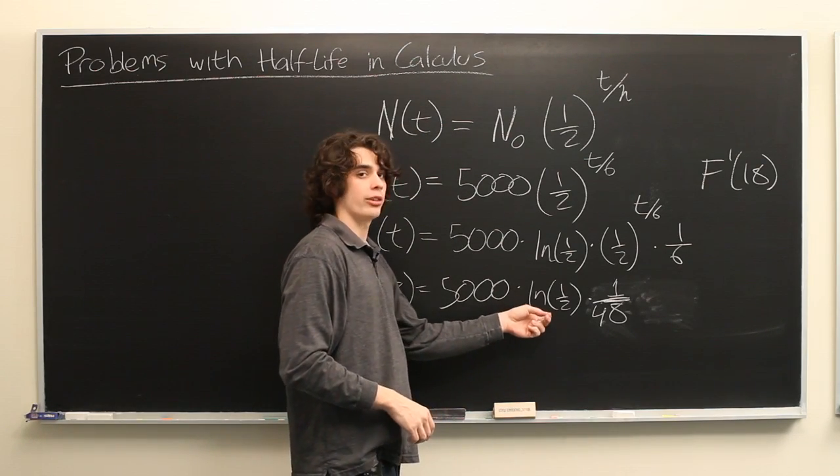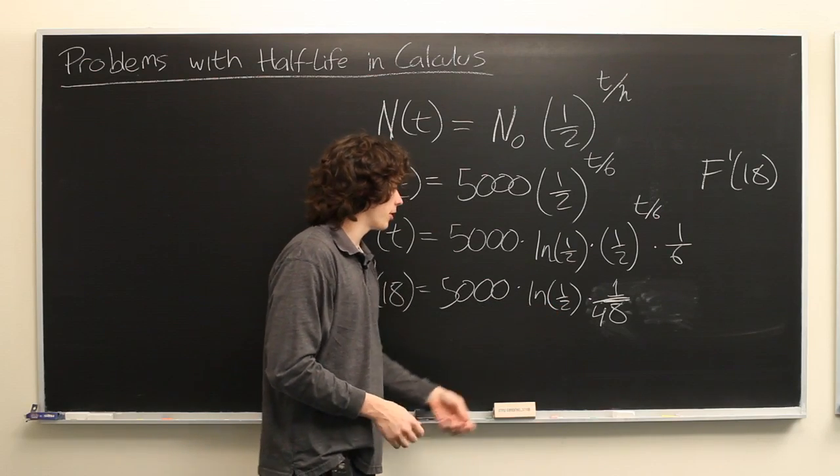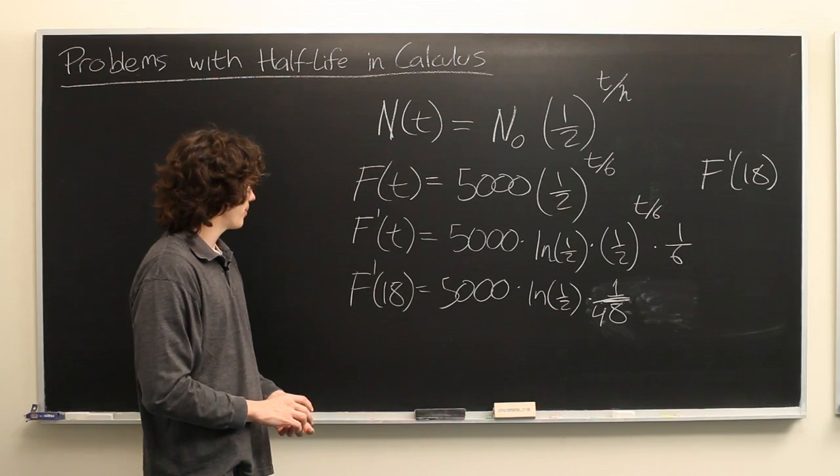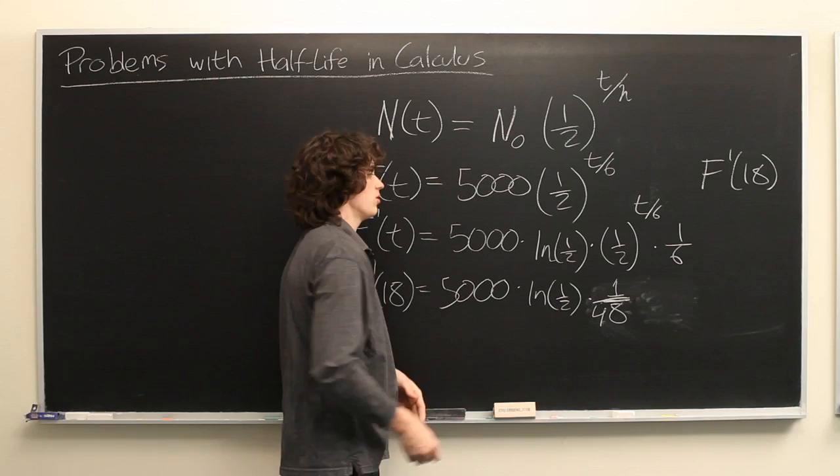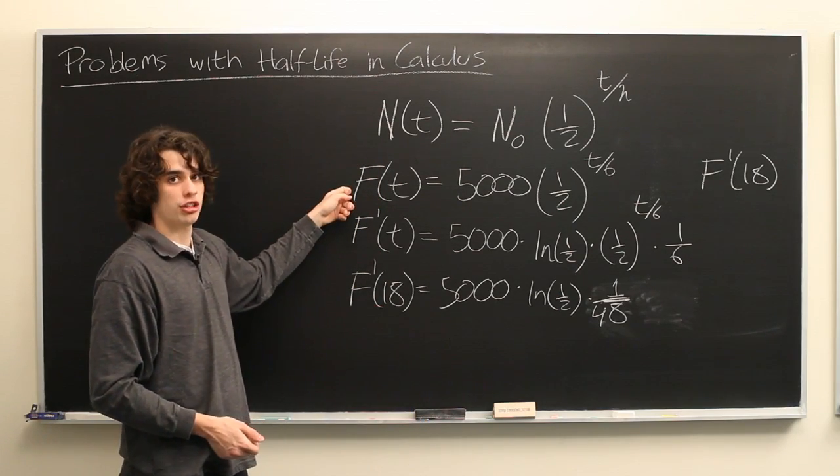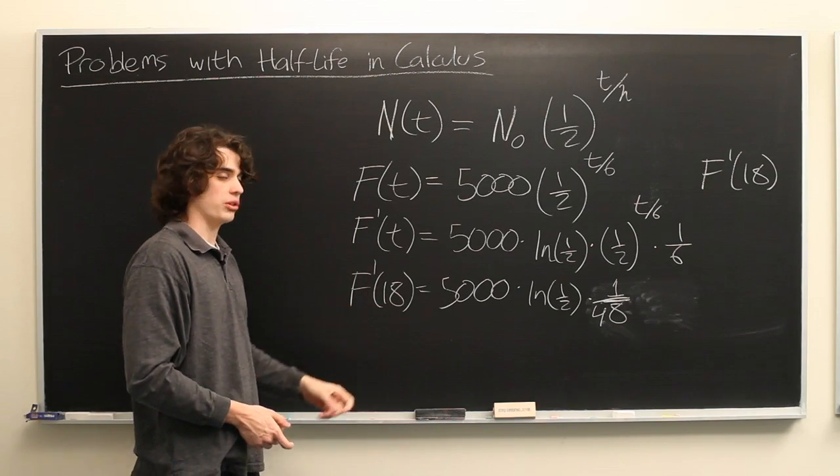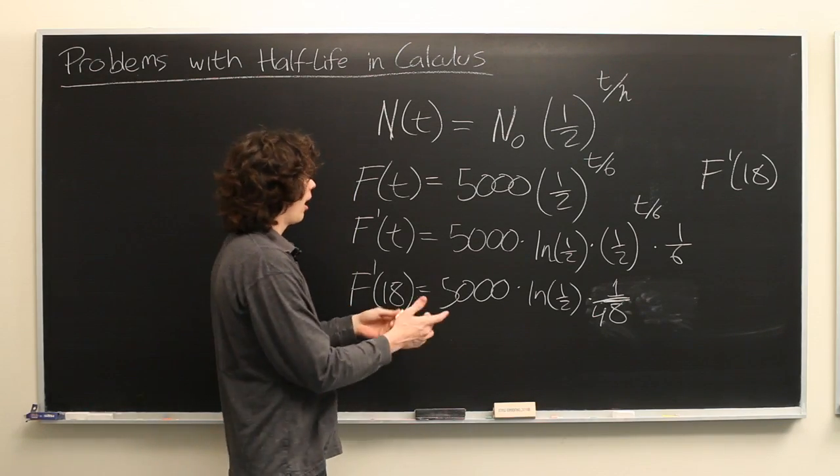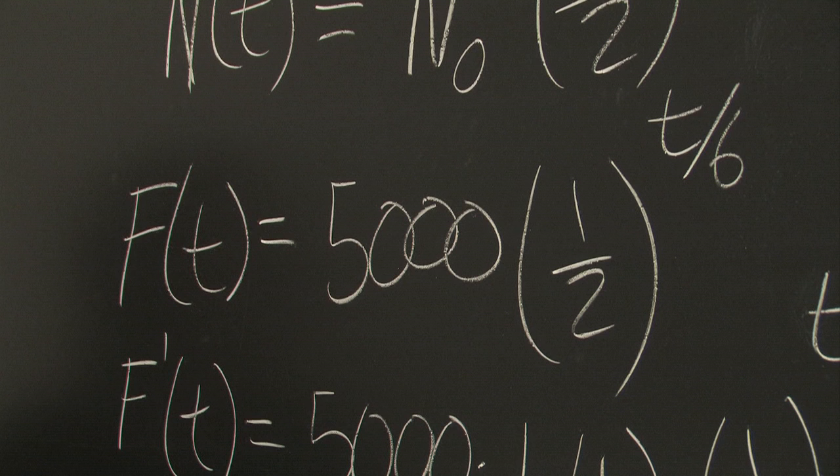And from here, again, you can simply take out your calculator or use a tool online to figure out what the natural log of one-half is. Multiply all these quantities together, and what that gives you is the instantaneous rate of change of the number of francium atoms at time t equals 18 hours.